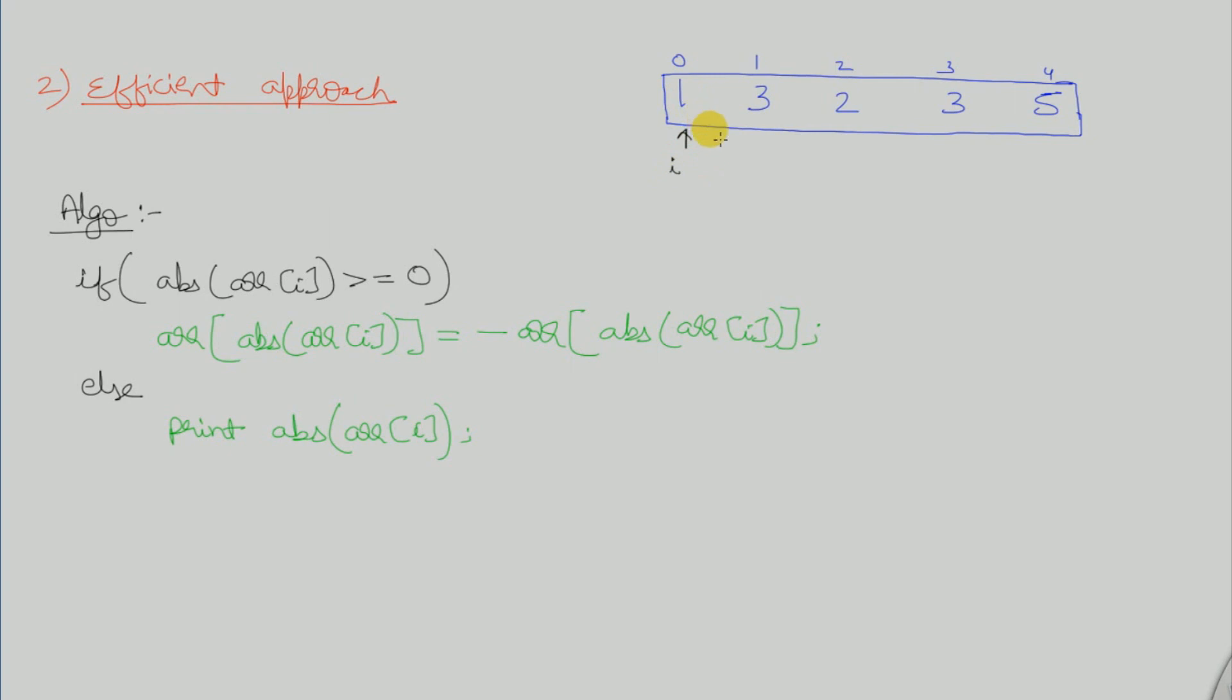We are at index 0. The absolute value at array[0] is 1, which is greater than or equal to 0. At index 1, element 3 is present, which is greater than or equal to 0, so we make it negative and move to the next element.